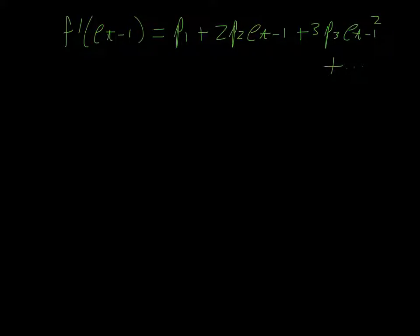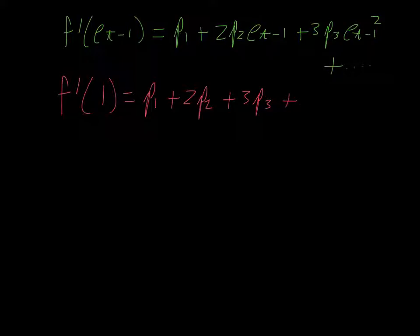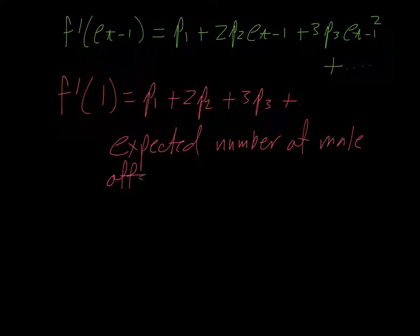So notice, if we look at F prime of E of T minus 1, that's going to be P1 plus 2P2 E sub T minus 1 plus 3P3 E sub T minus 1 squared plus, and continuing there, using some calculus and the fact that that's an absolutely convergent power series, we plug in 1, we're going to get P1 plus 2P2 plus 3P3. This is exactly the expected number of male offspring with a given surname.